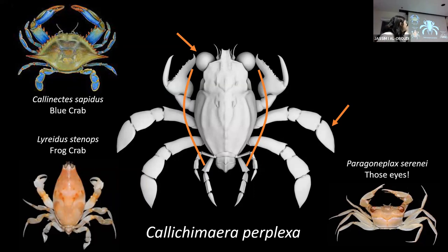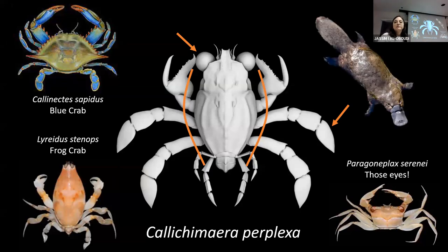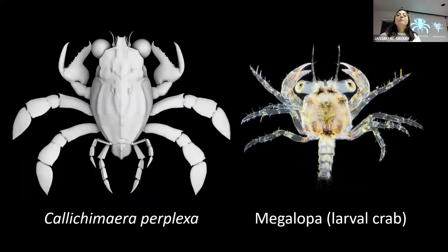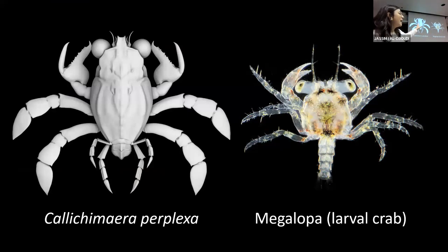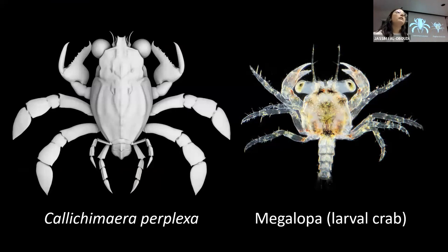Because of this weird combination of features, many people have called Calychimera the platypus of crabs. We do see this sort of body plan elsewhere in the crab world — in the megalopa, the larval crab stage. Larval crabs have a skinny body, really big eyes, and float around in the water column. So Calychimera is an adult crab that has retained all of these juvenile features — essentially a giant baby crab.